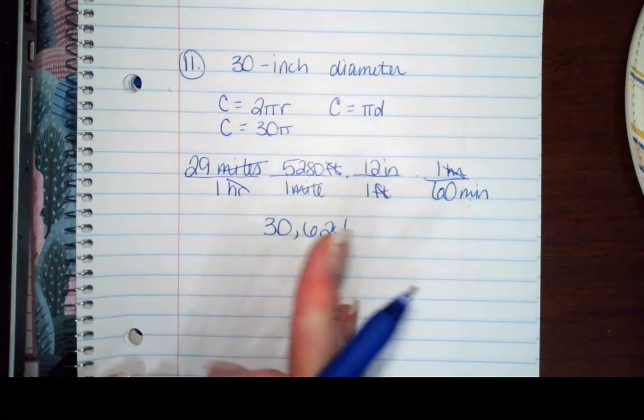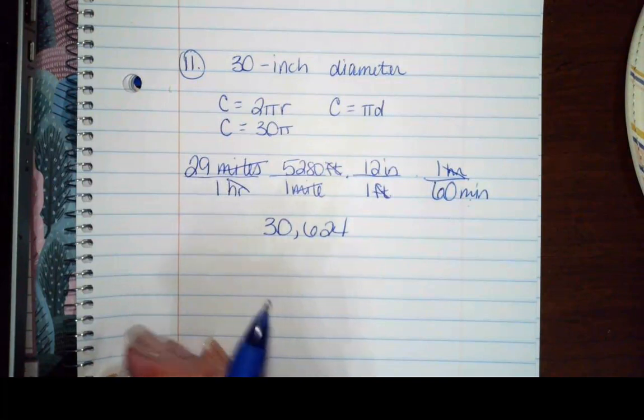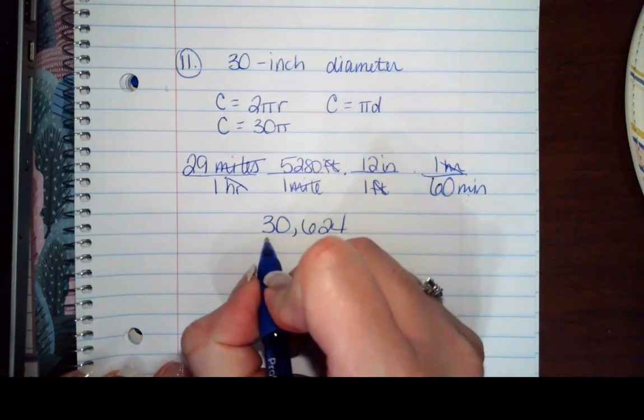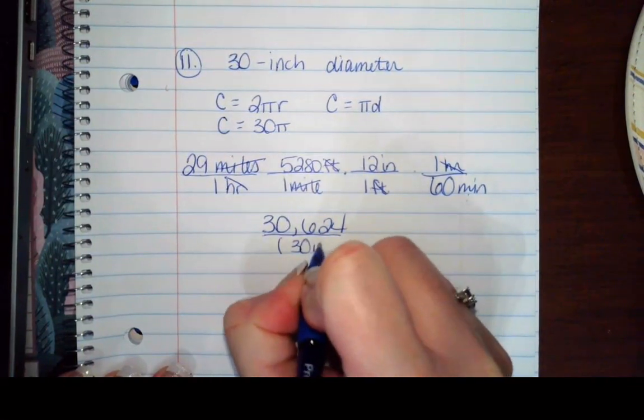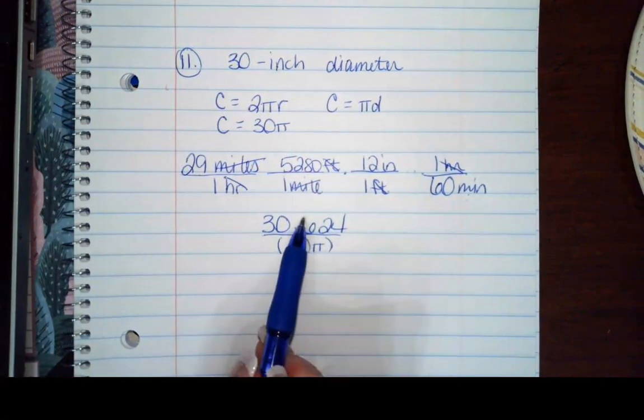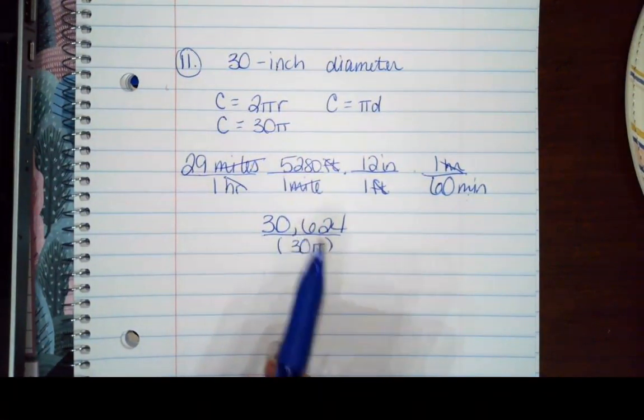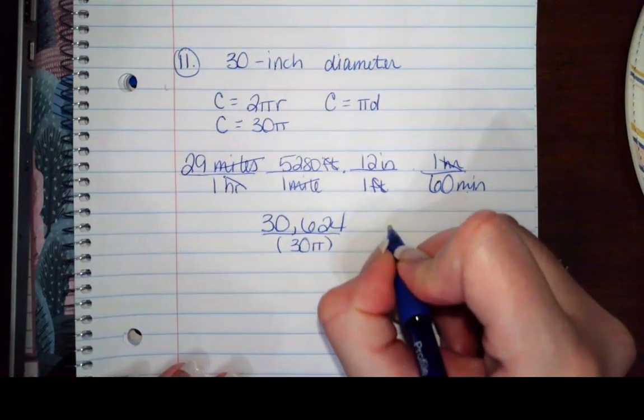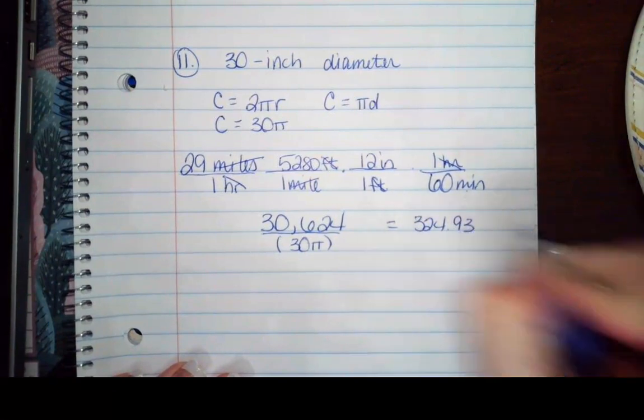So I want to know how many rotations there are. That's going to be the easiest thing for me to answer first. So I'm going to divide this carefully by 30π. That's going to tell me how many rotations are in this number. And that is going to give me 324.93.